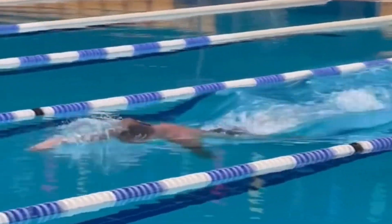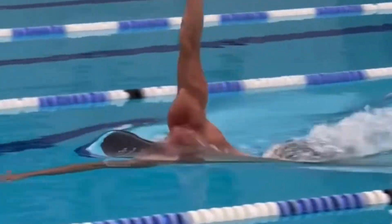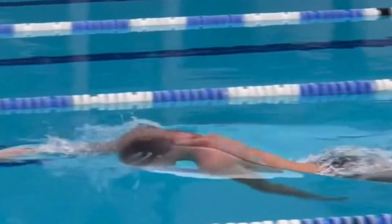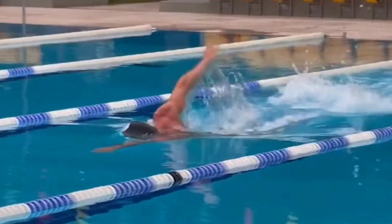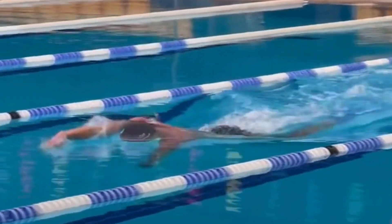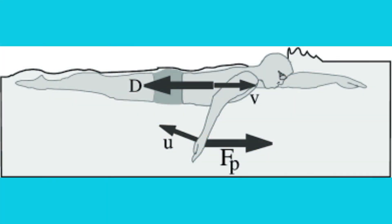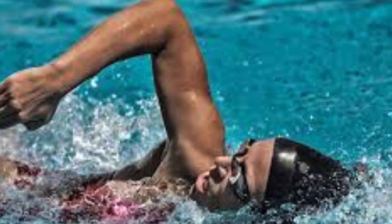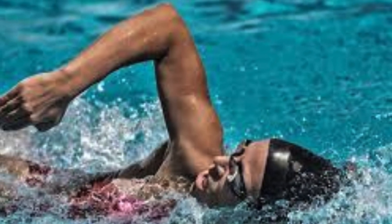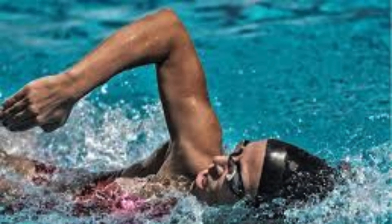And now, propulsion — this is how you generate forward movement in the water. Both your arm strokes and your kick contribute to propulsion, but they must work in harmony to be effective. The key to maximizing propulsion is using swimming mechanics efficiently. For example, a high elbow during the catch phase of your freestyle stroke can help you pull more water and propel yourself forward more effectively.